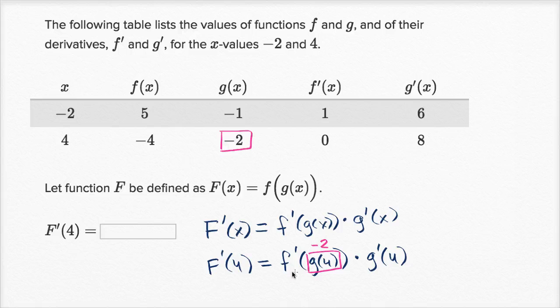And so this first part is f prime of negative two. So what is f prime of negative two? Well, when x is equal to negative two, f prime is equal to one. So this right over here is f prime of negative two. That is equal to one.